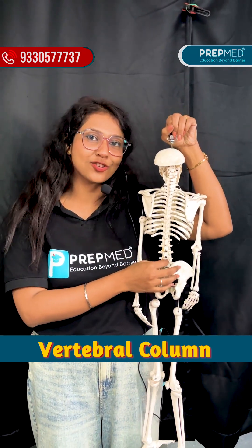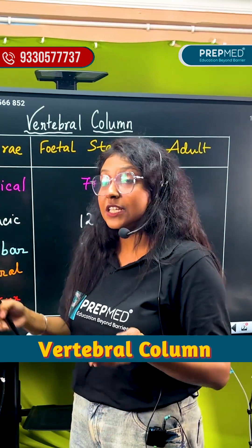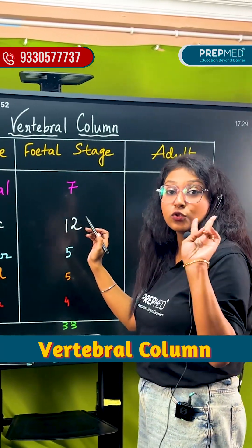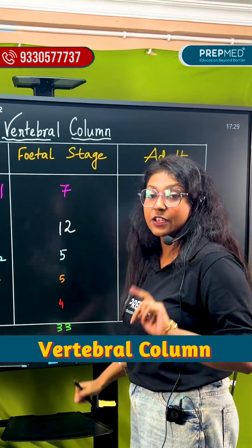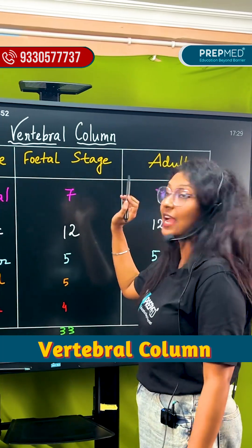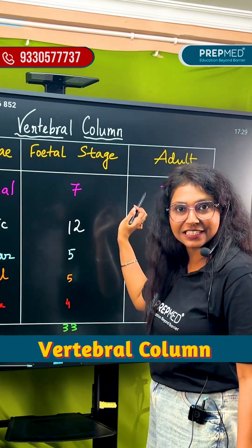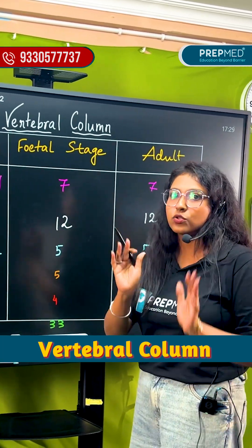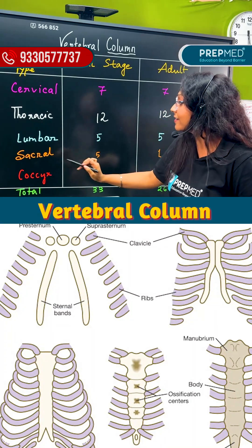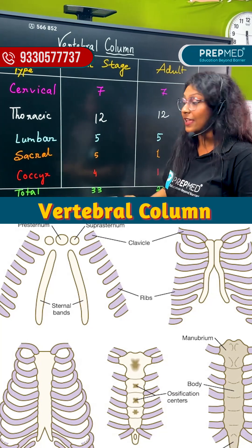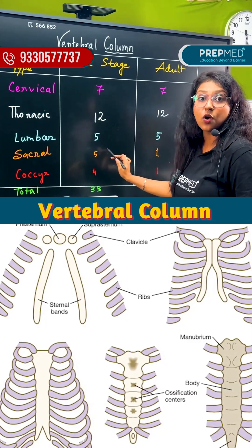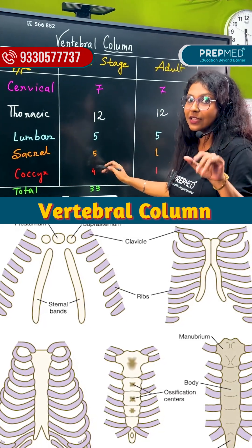The vertebral column is different in different phases. It's a fetal condition and it's an adult stage — it's a different structure. It's the sacral and coccyx. It's sacral during the fetal stage — that's the 5th stage.